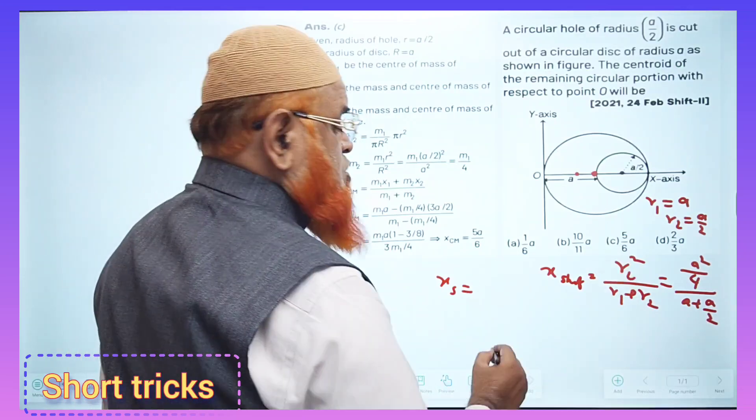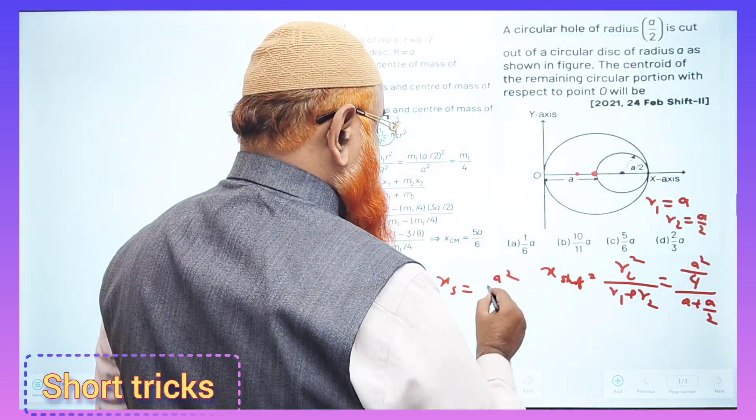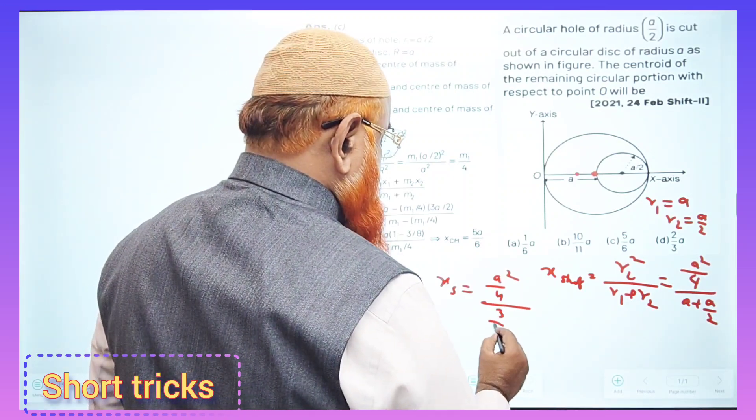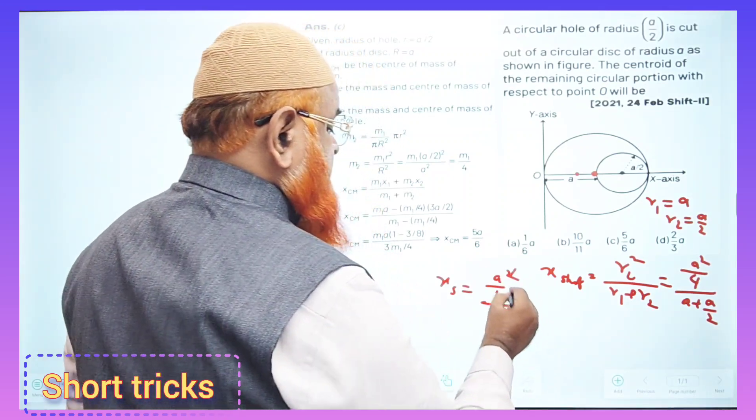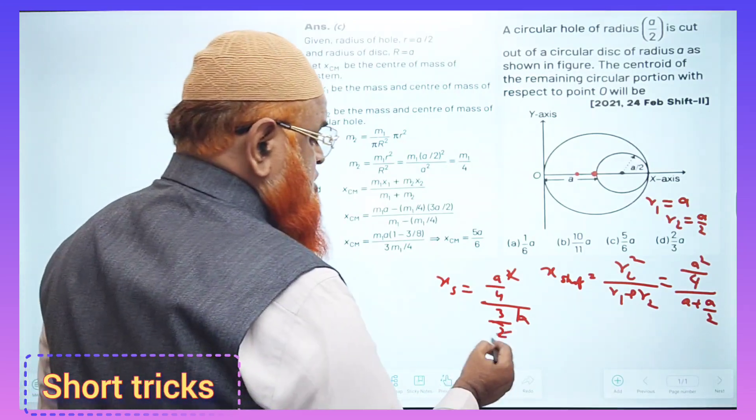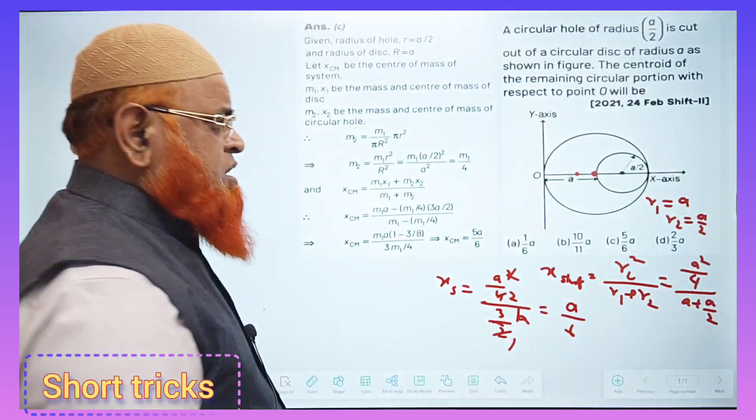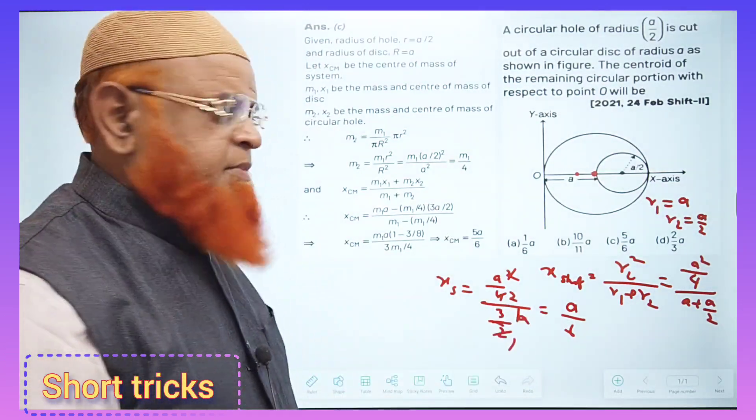You will be getting x shift as a²/4 divided by 3/2 a. So here a² and a gets cancelled, then two twos gets cancelled. At last we will be getting a/6. So we got x shift as a/6. So what is this distance here now?